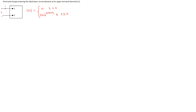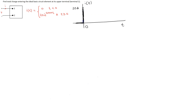We can sketch the waveform of the current as follows. Time is along the x-axis and magnitude along the y-axis. The current is 0 for time t less than or equal to 0, then at time t=0 its magnitude is 20 amps. The current then decays and reaches 0 at about 1 millisecond.